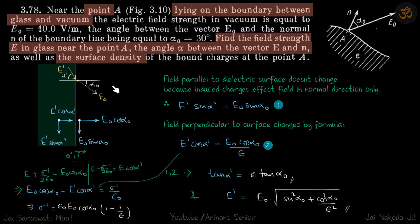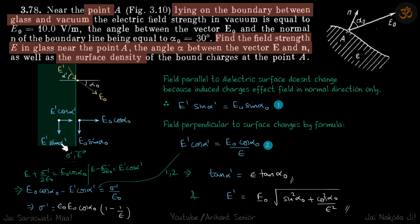Looking at the diagram, we have E naught making an angle alpha naught, and we need to find E dash and alpha dash. We break both fields into their components. The field parallel to the dielectric surface does not change because induced charges affect the field in the normal direction only. The normal component is E naught cos alpha naught, the parallel component is E naught sin alpha naught, and inside we have E dash cos alpha dash and E dash sin alpha dash. Therefore, E dash sin alpha dash equals E naught sin alpha naught.